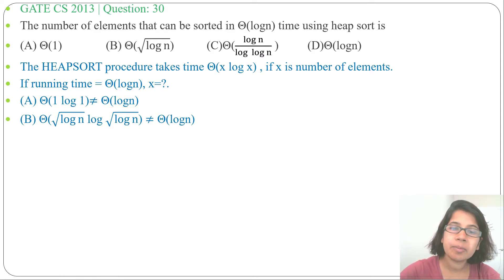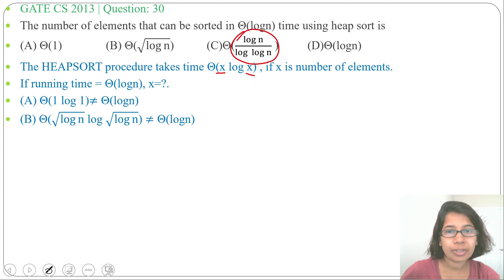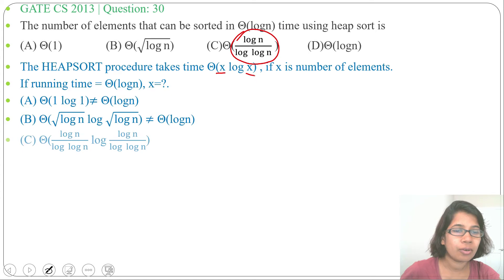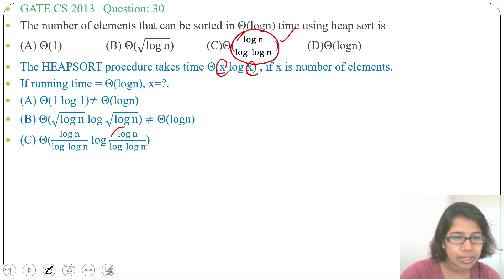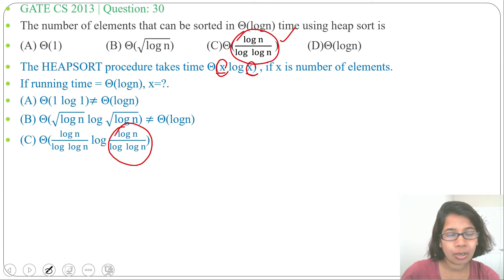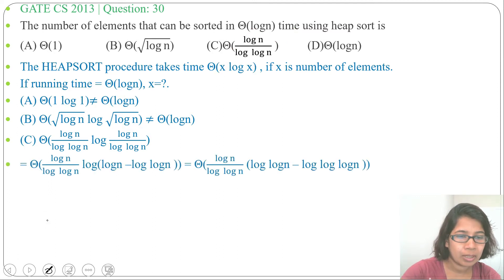Option C: let's put x = log n / log(log n) and check whether it equals theta of log n. Substituting, we get theta of [log n / log(log n)] · log[log n / log(log n)]. The log of that fraction can be written as log n minus log(log n).